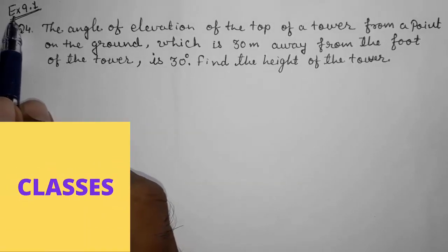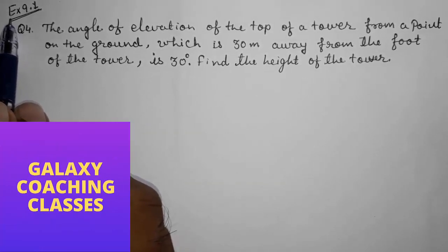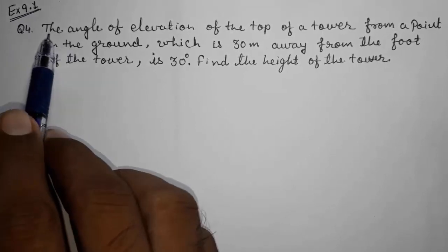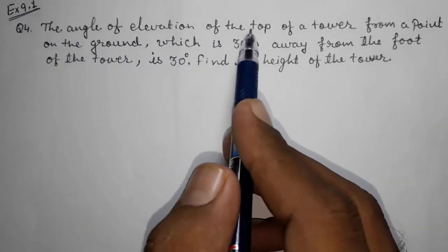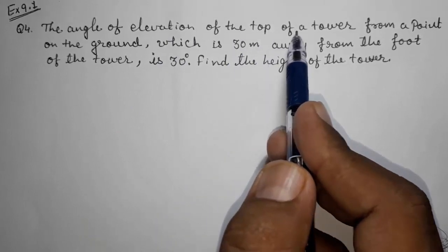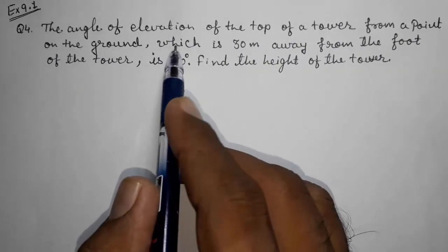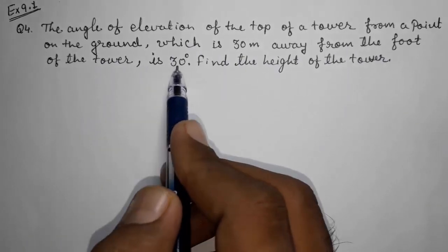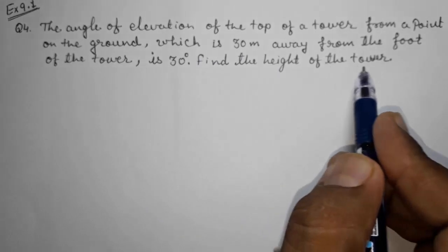Hello friends, today we are going to solve CBSE class 10th maths exercise 9.1 question number 4. The angle of elevation of the top of a tower from a point on the ground which is 30 meters away from the foot of the tower is 30 degrees. Find the height of the tower.